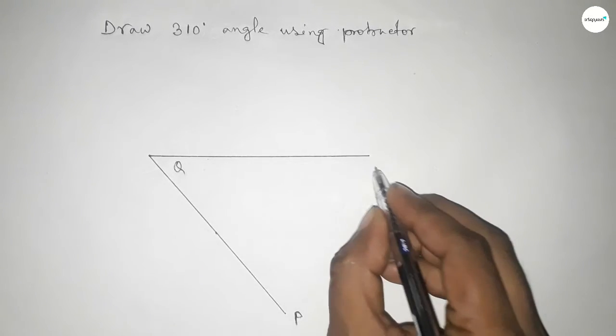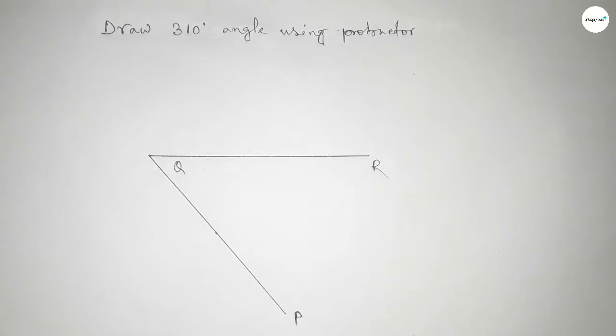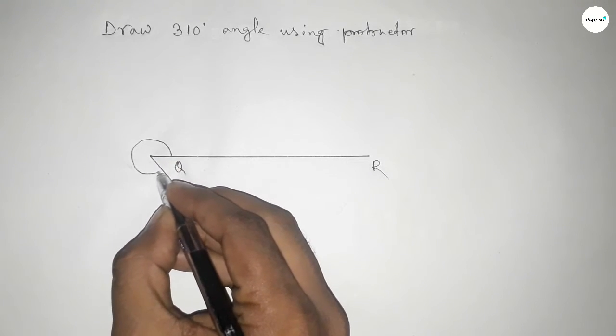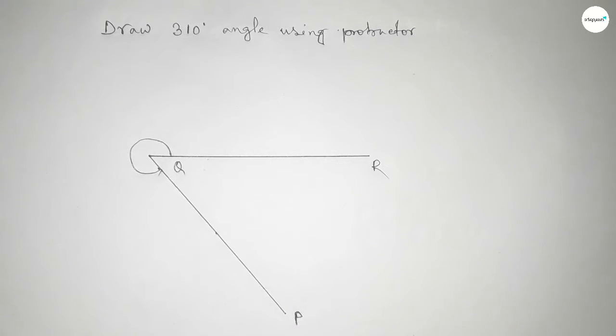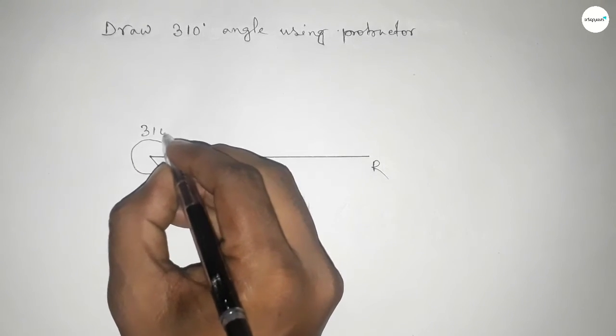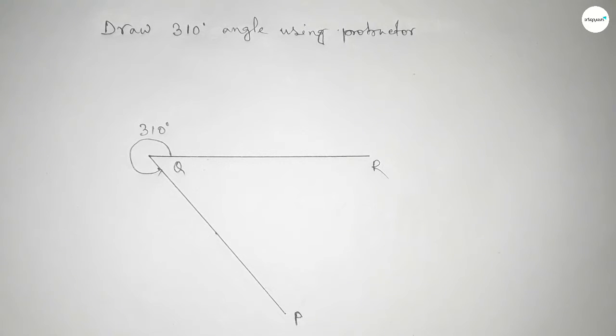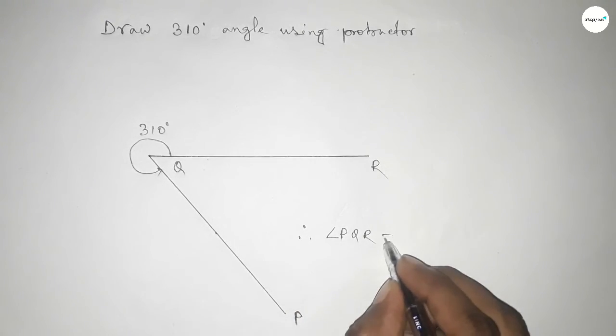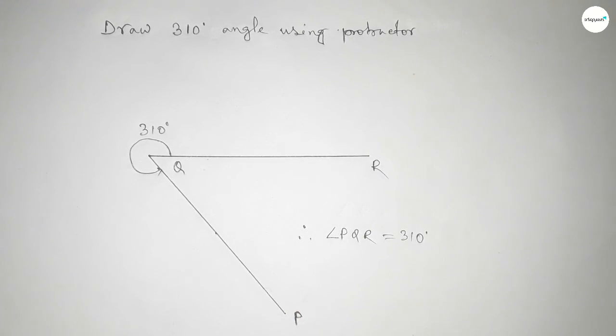This is P, Q, and R, so angle PQR. This is angle PQR, and this is 310 degrees. Therefore, angle PQR equals 310 degrees. That's all, thanks for watching.